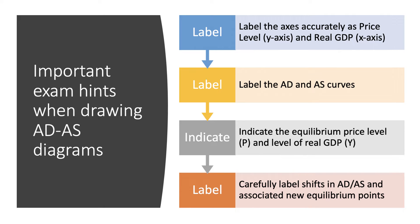A few important exam hints before we go through some examples. When drawing these diagrams, it's absolutely critical to label the axes accurately — general price level on the y-axis and real GDP on the x-axis. Label AD and AS curves, indicate the equilibrium price and level of GDP, and carefully label any shifts in AD and AS and associated new equilibrium points. Attention to detail can make a big difference to your analysis marks. Also make your diagrams nice and big — at least a third, perhaps half a side of A4, for each diagram.